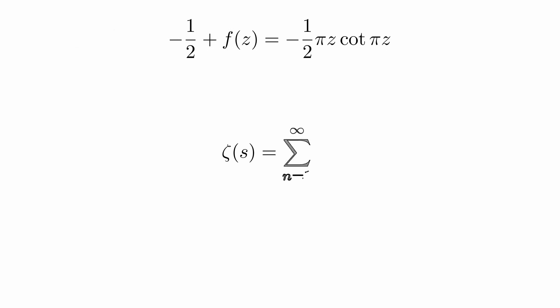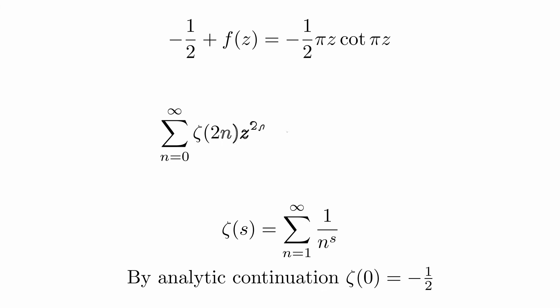For that we define the Riemann zeta function. Our goal was to find the values at the even positive integers. By analytic continuation, we can assign a value to zeta of zero. This is minus one half. Plugging this in, we get the generating function of the zeta function at even integers is a multiple of the cotangent.